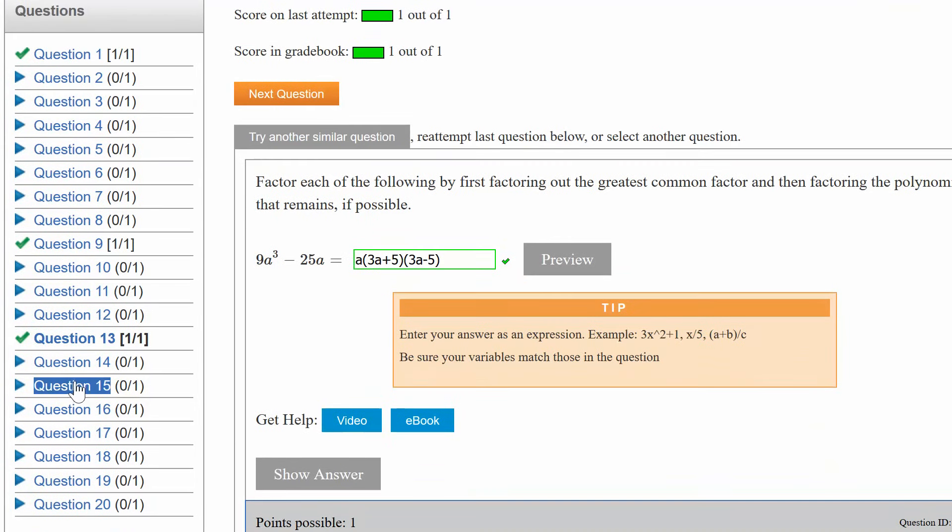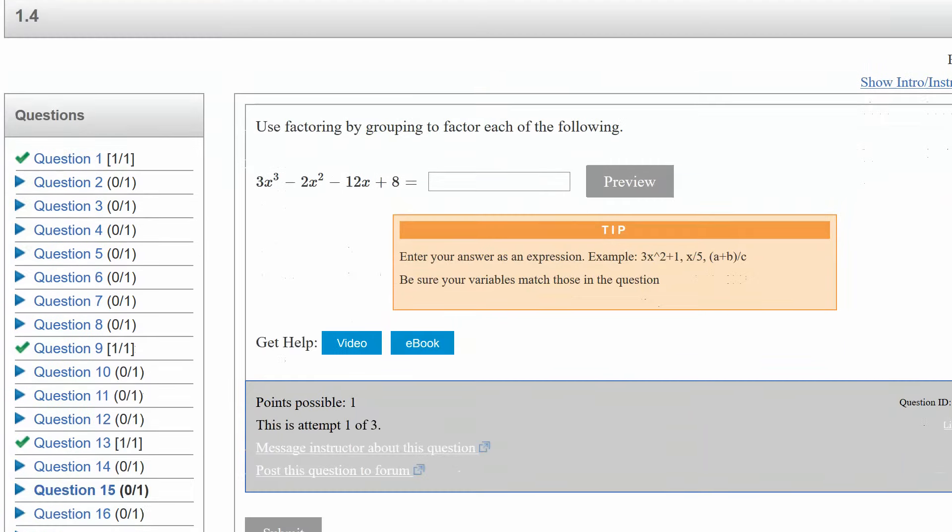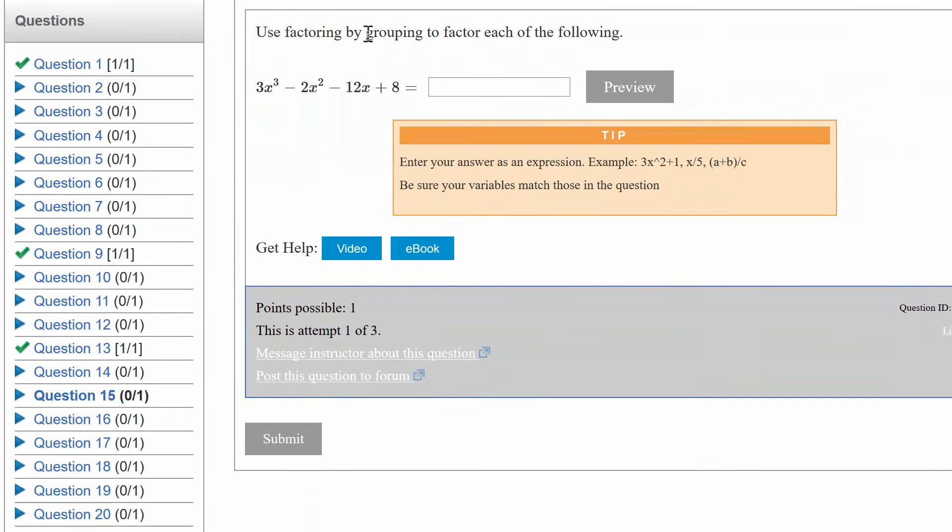And the last question for 1.4 is this one. It gives you a little hint of what to do. It says factor by grouping, using the grouping method to factor. So notice you have four terms this time. The first thing to ask ourselves, is there a greatest common factor that goes into all four terms? In this case, it's going to be a no. But we still want to be able to factor down a polynomial of four terms inside it here. We do this through the means of something called the grouping method.